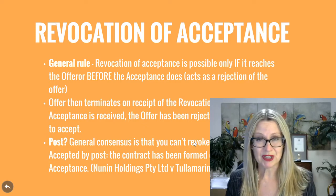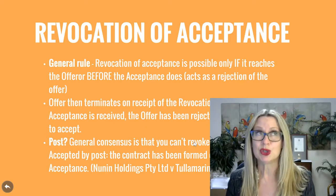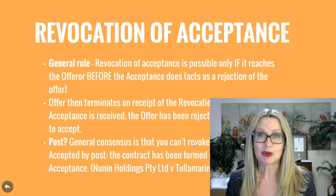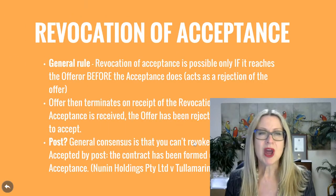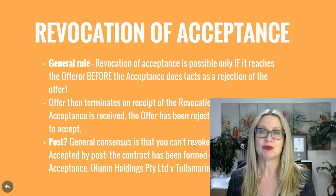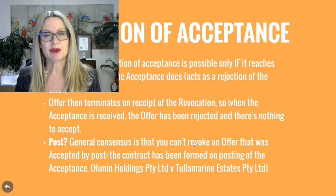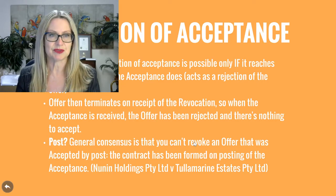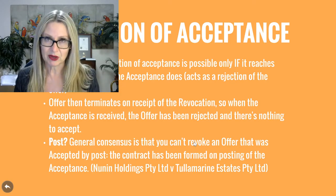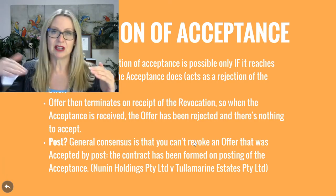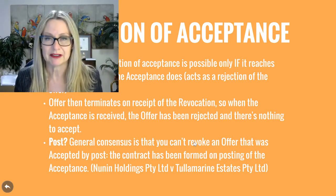Purporting to withdraw will probably constitute a repudiation for which the other party can terminate and sue for damages. But what happens if your revocation does actually magically reach the offeror before the acceptance does? The offer terminates on receipt of the revocation. So when the acceptance is received later on, the offer has already been terminated by the earlier revocation — there's nothing to accept anymore. The acceptance just floats in after all the actual damage has been done.